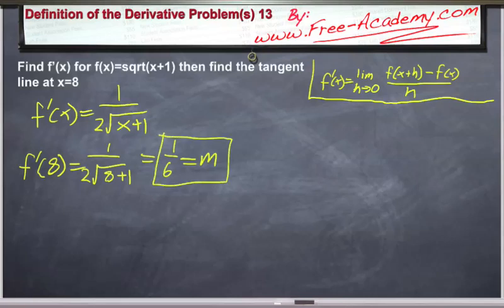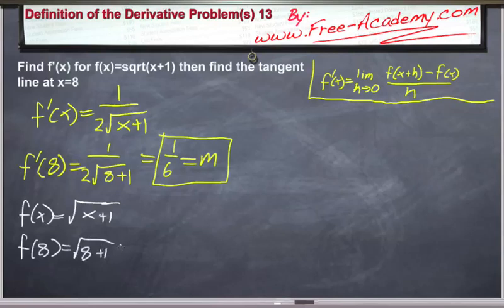Next we'll find a point, and once we have a point we can use the point-slope form to write the equation of our tangent line. f(x) equals the square root of (x+1), and we're looking for the point x equals 8. So f(8) equals the square root of (8+1), which equals 3. So this gives us the point (8, 3) as well as the slope equal to 1/6.